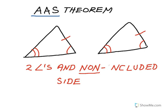Here's the reason why. If this angle is congruent to this one, and this one to this one in the two triangles, we know previously that if two angles in one triangle are congruent to two angles in another, the third angles have to be the same measure — they have to be congruent to each other. And what this creates is an Angle-Side-Angle.